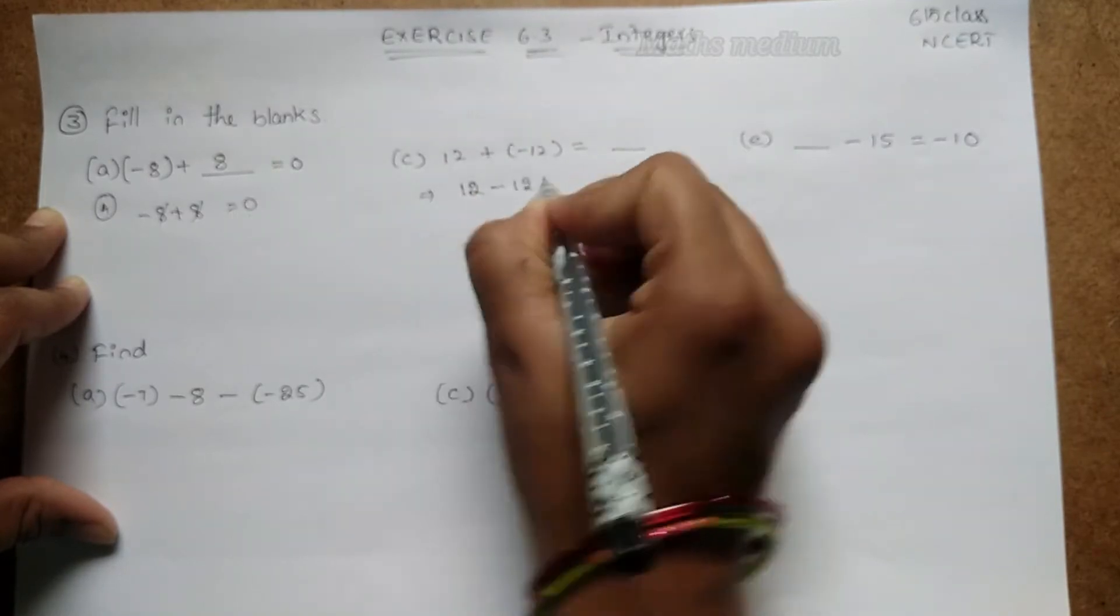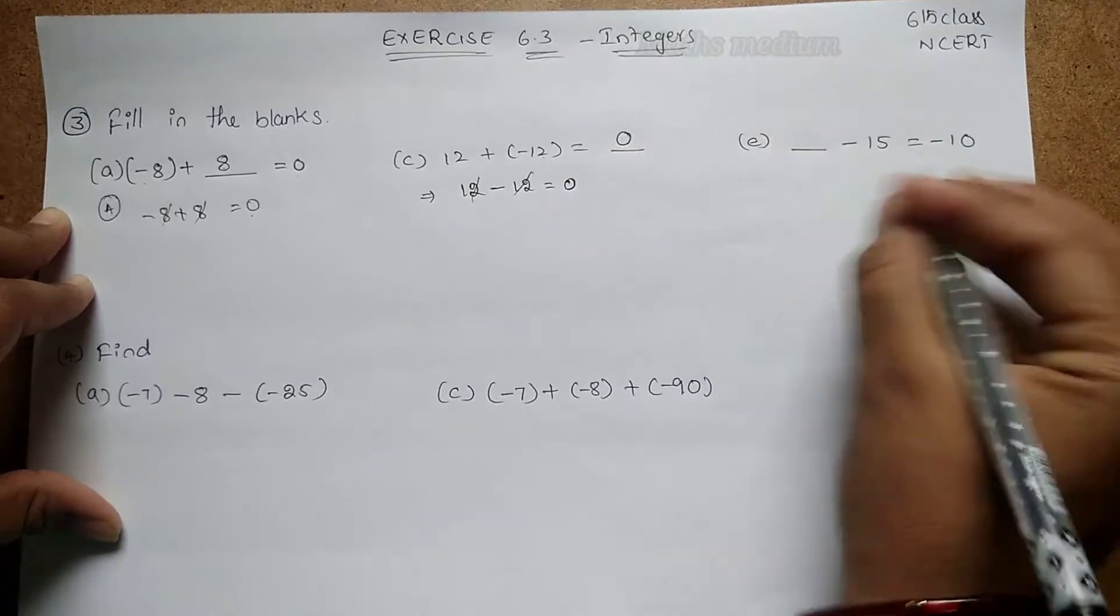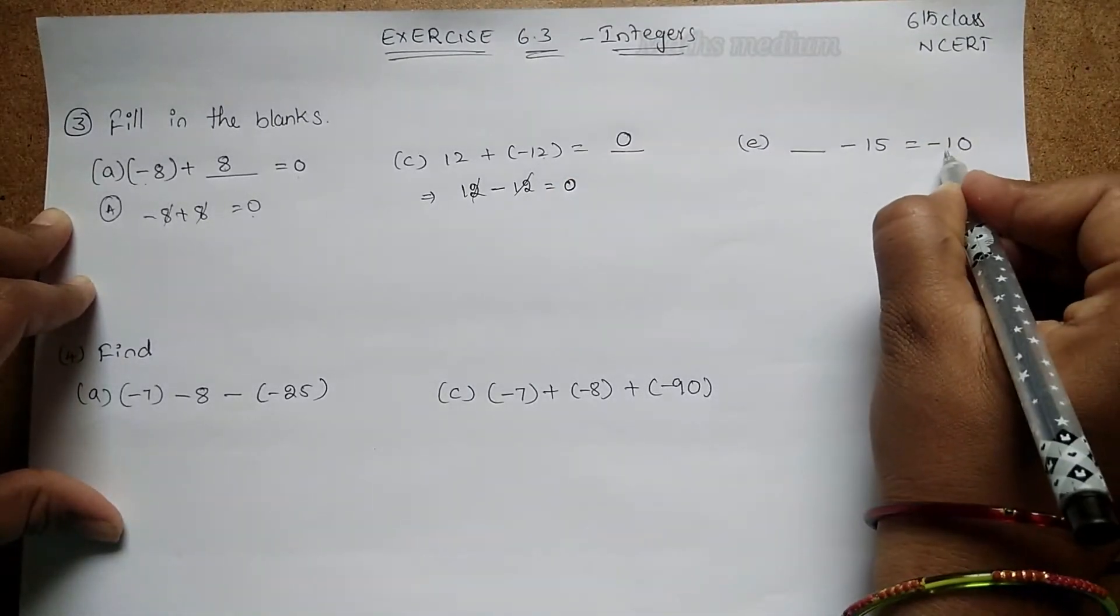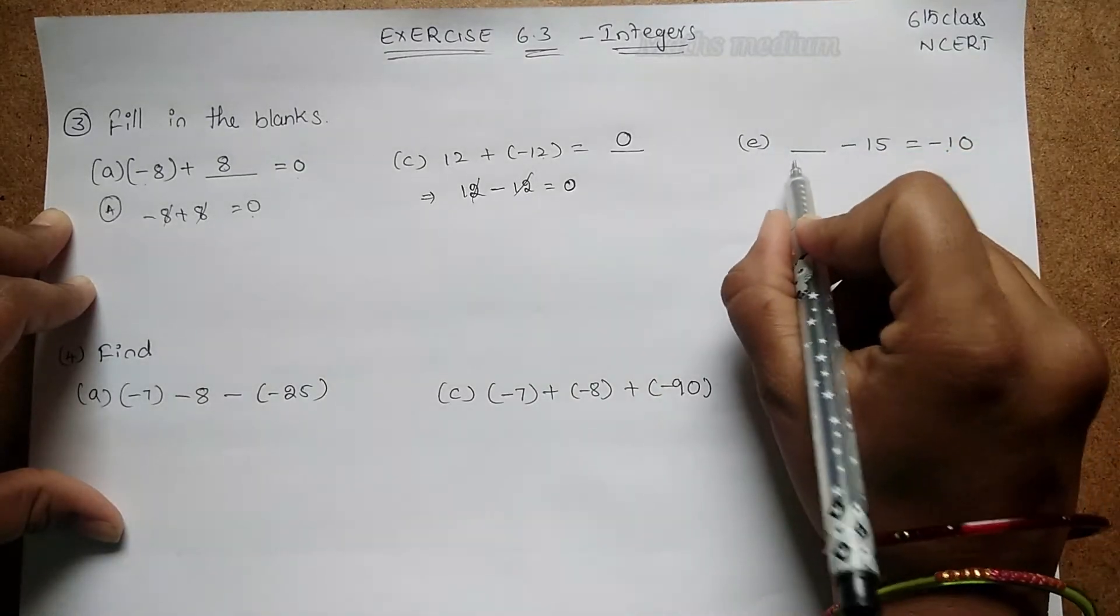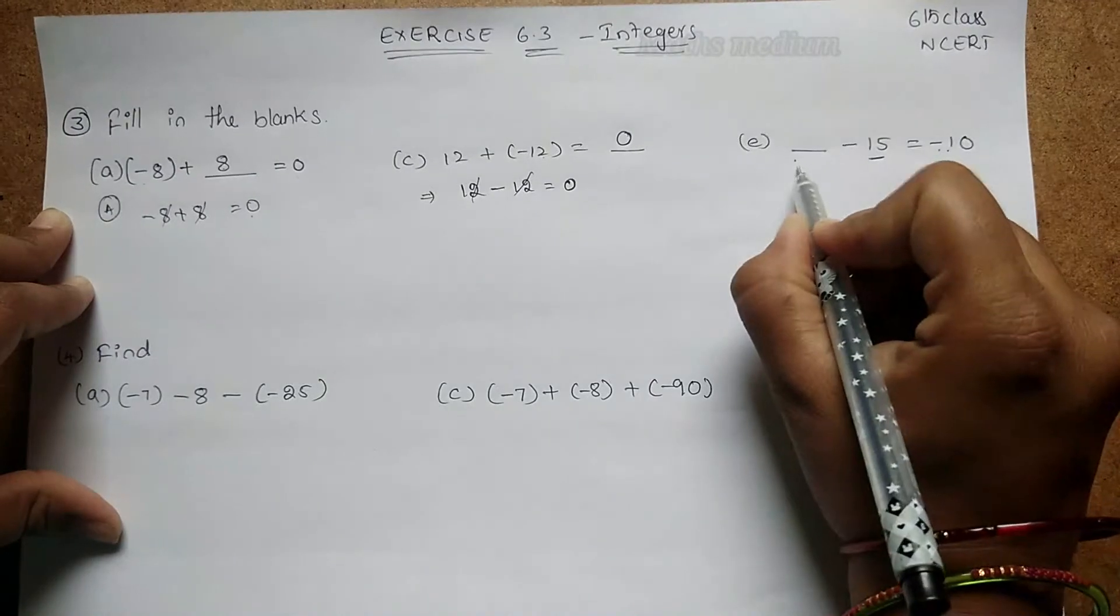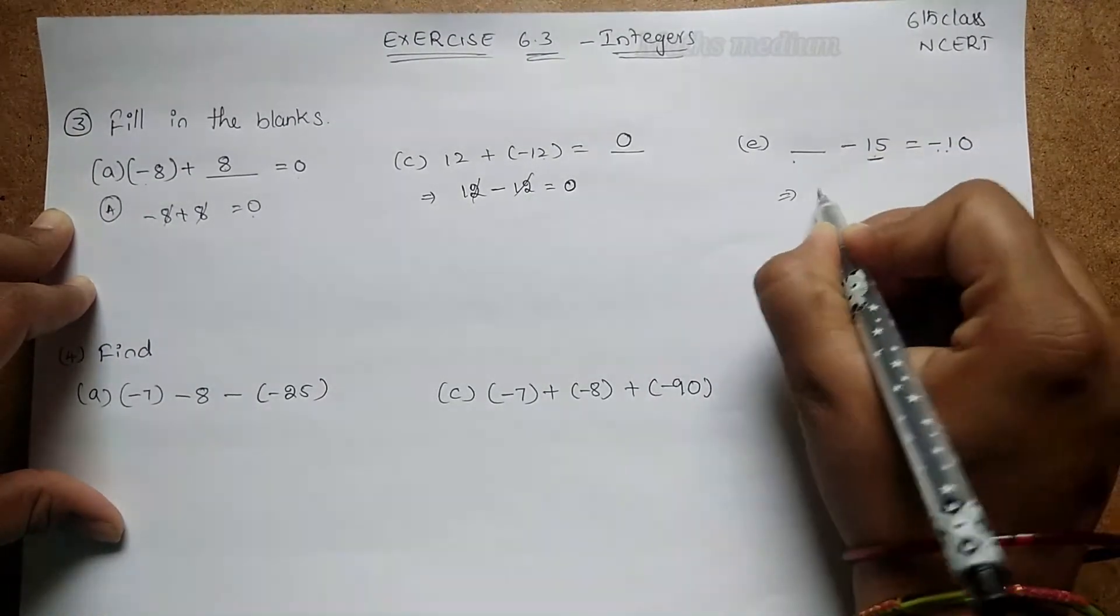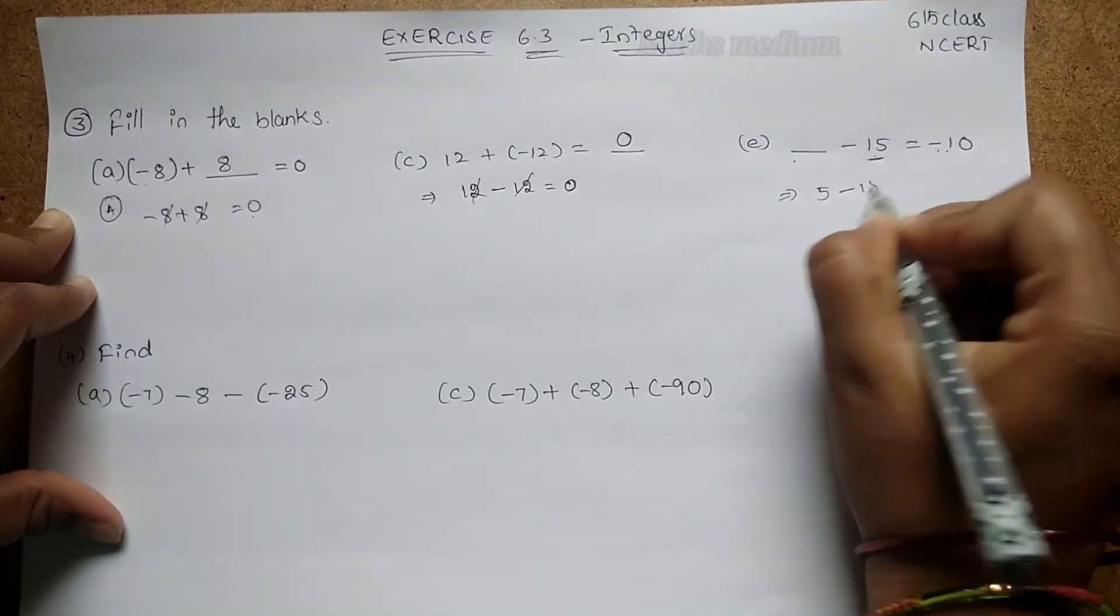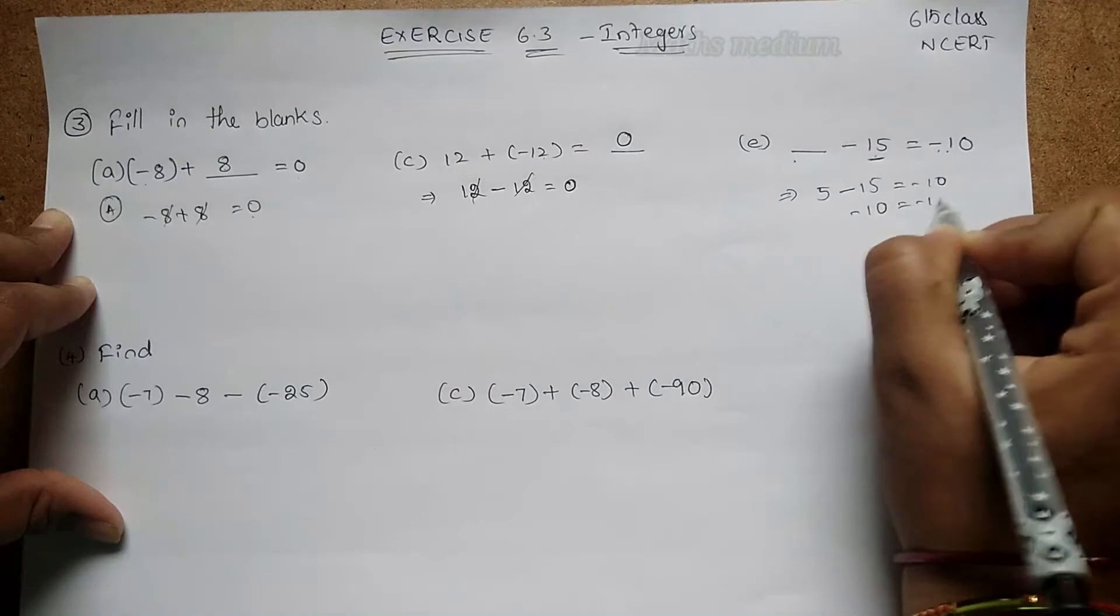Next coming to here: 12 + (-12) = 0. The 12 cancels, the answer is 0. Next, here is -10 as the answer, so this is a negative number. So here we get a positive number because the answer is negative, so ___ - 15 = -10. Here is 5 because 5 - 15 = -10. So the answer is positive 5.